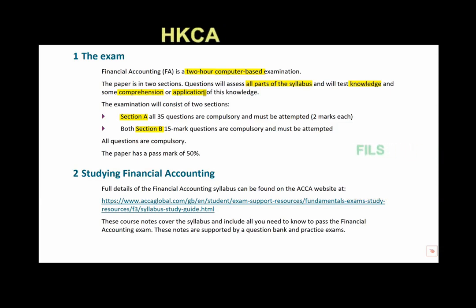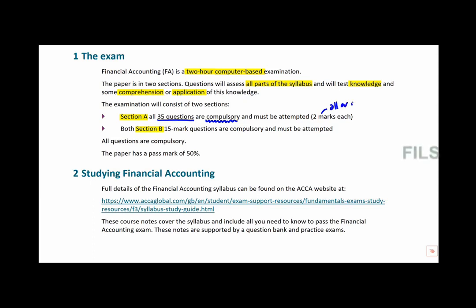There are two sections. Section A is bulky in the sense that it's 35 questions, but the questions themselves are nice and short. All compulsory — there is no such thing as an optional question in this paper. There are two marks each and it's all or nothing. There is no such thing as half marks or partially correct. If it says select three of the following and you get two right but one wrong, that is zero marks. You have to get 100% right to get those two marks.